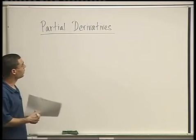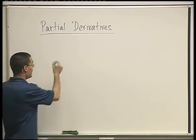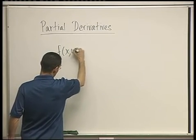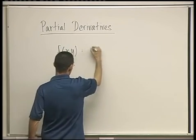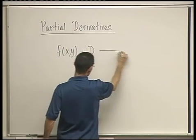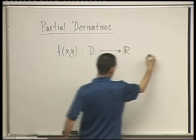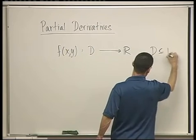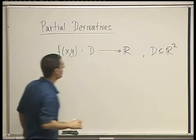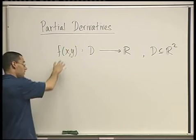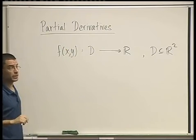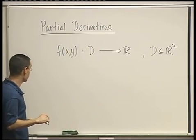What we want to explore now is scalar functions — f of x, y — a function from some domain D to R, where D is in R². This is what we call a scalar function, and we're going to start with functions of two variables; later on we'll discuss it for functions of three variables.